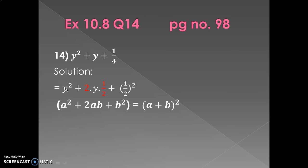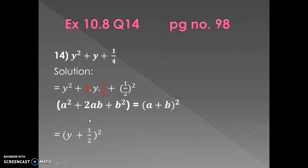If you compare our step with the formula, you can see that we have made the expression in the form of the formula. The formula says that if you have an expression in this form you can write it as (first term + last term)². Here the first term is y² and the last term is (1/2)². So just as a² and b² give us (a + b)², here y² and (1/2)² give us (y + 1/2)².